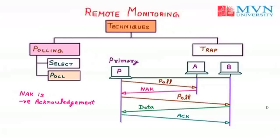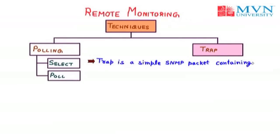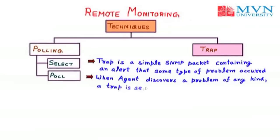Next we have the TRAP technique. Whenever an event occurs, the network device generates a signal called a TRAP. A TRAP is a simple SNMP packet containing an alert that some type of problem has occurred. Whenever the agent discovers a problem of any kind, a TRAP is sent to its configured management system. TRAP is a one-way packet — it can only be sent from the agent to the management system, and the management station does not reply to confirm it received the TRAP.